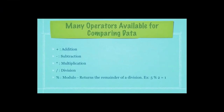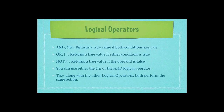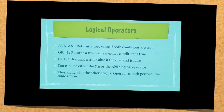There are many operators available for comparing data. We have addition, subtraction, multiplication, division, and modulo, which returns the remainder of a division — for example, 5 modulo 2 returns 1. For logical operators you have AND or the double-ampersand, which returns a value if both conditions are true. OR returns true if either condition is true. NOT returns true if the operand is false — it makes everything the opposite of what it is, turning true to false and false to true.